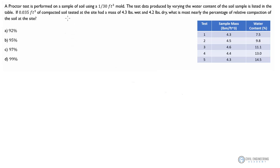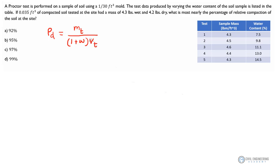So how are we going to tackle this one? We need to remember some of our proctor test theory and consult our FE reference handbook and look at some of the phase relationships that we have with soil. There is a formula that says rho sub d, which is the dry density of the soil, can be calculated by taking m sub t, the total mass, and dividing it by 1 plus w, which is the percentage of water content, times the total volume of the soil.